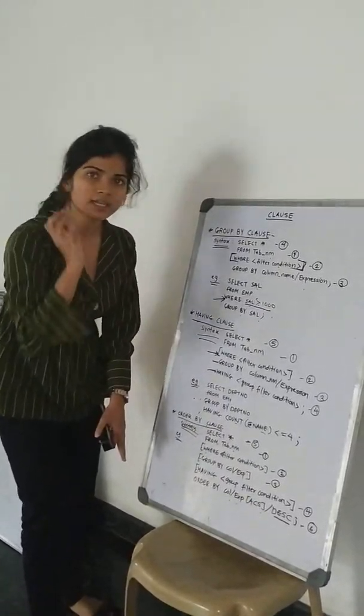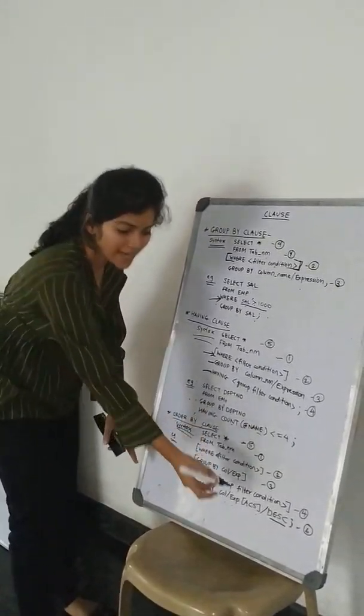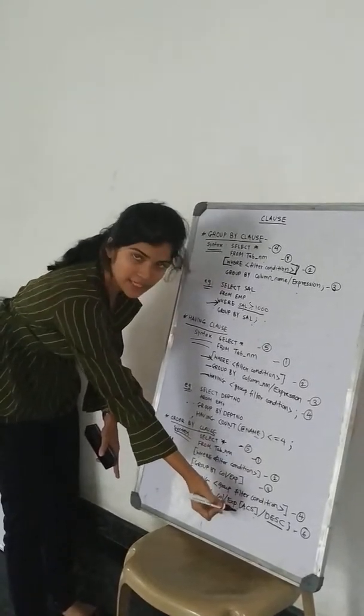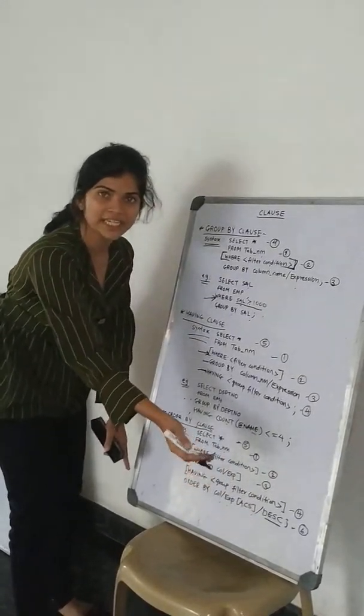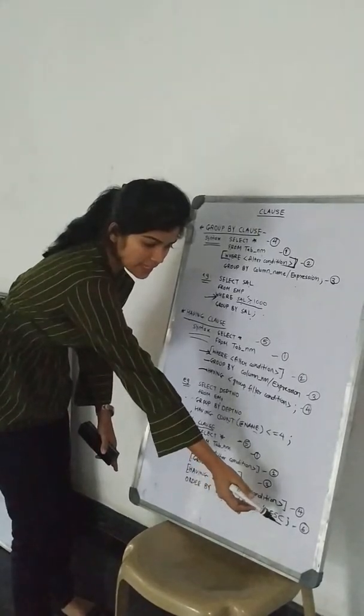If we want to write ASC, it's okay. And if we don't want, it is also okay. But for descending, it is compulsory to write DESC.